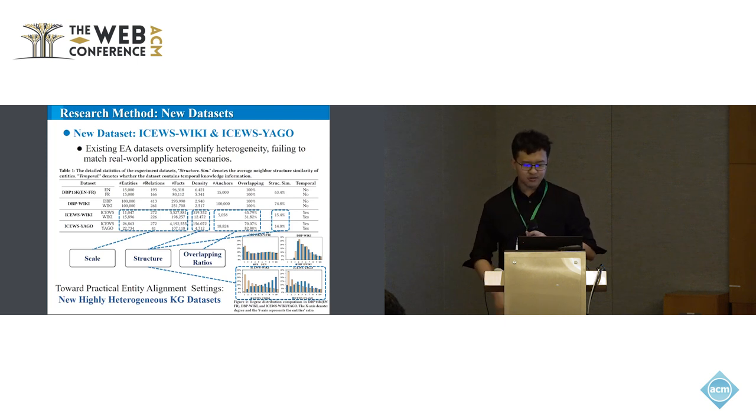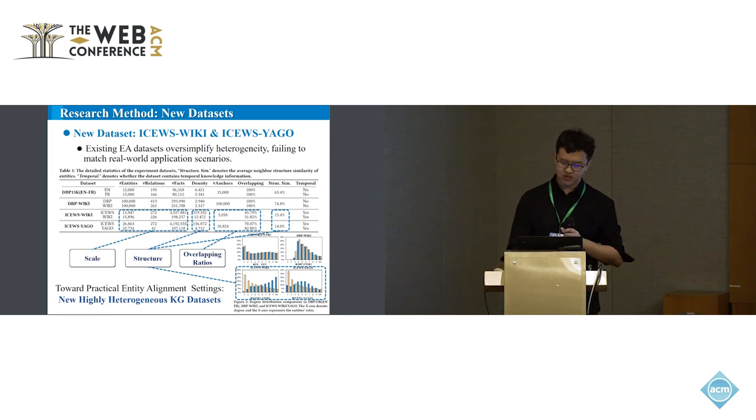In overlapping ratio, the datasets mimic a more common scenario of large KG sources, such as domain-specific KGs like YEWS and general KGs like Wiki or YAGO. The difference in the sources are typically not language but the coverage of knowledge.